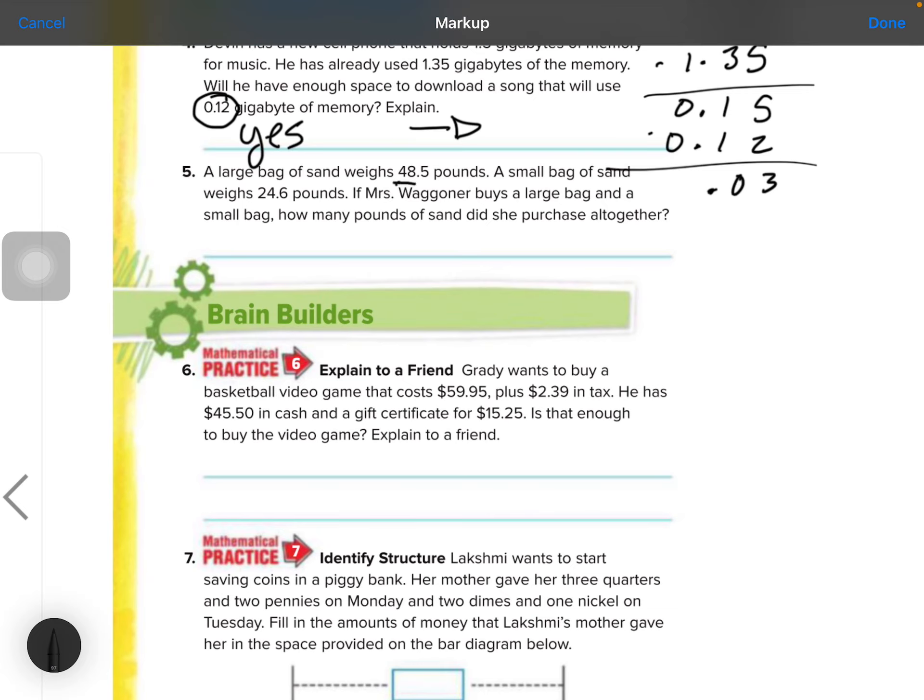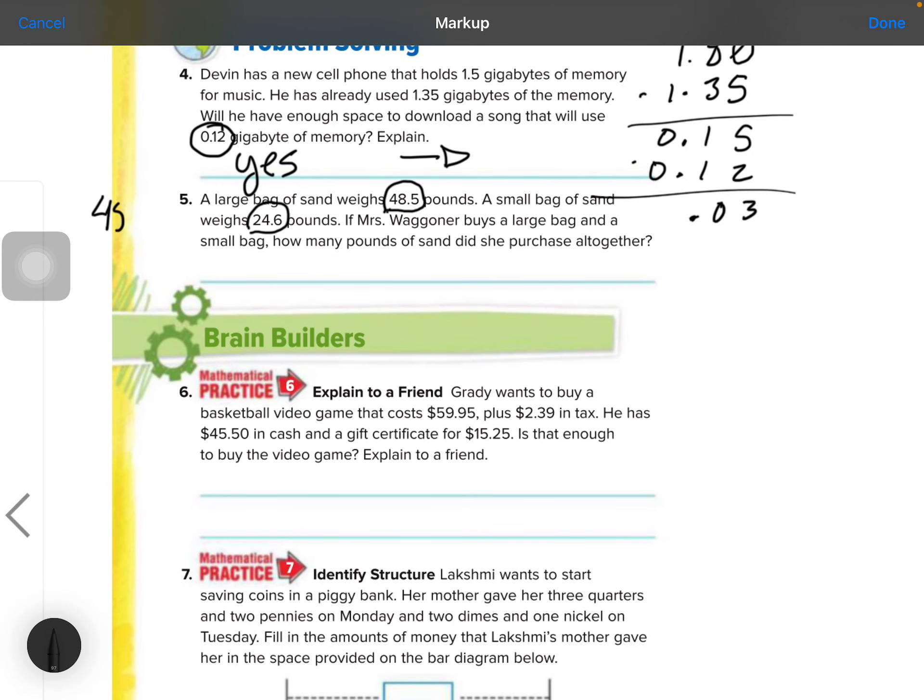Number 5, a large bag of sand weighs 48.5, a small bag of sand weighs 24.6 pounds. If Mrs. Wagner buys a large bag and a small bag, how much sand will she have purchased altogether? Alright, so this is an addition problem, right? So come over here and do 48.5, then line the decimal point up, 24.6. 5 plus 6 is 11. Bring the decimal point down. 8, 9, 10, 11, 12, 13. 4, 5, 6, 7. So she will have altogether 73 pounds, 73.1 pounds, because pounds are what she's measuring.